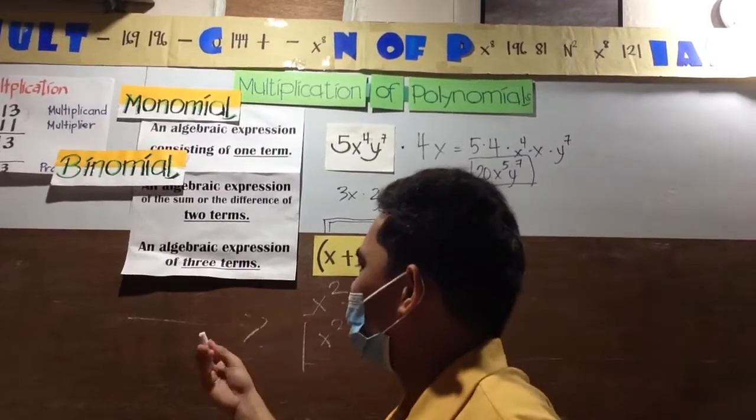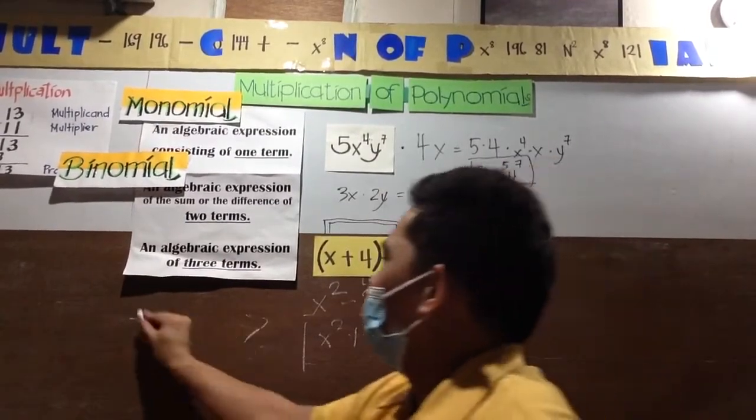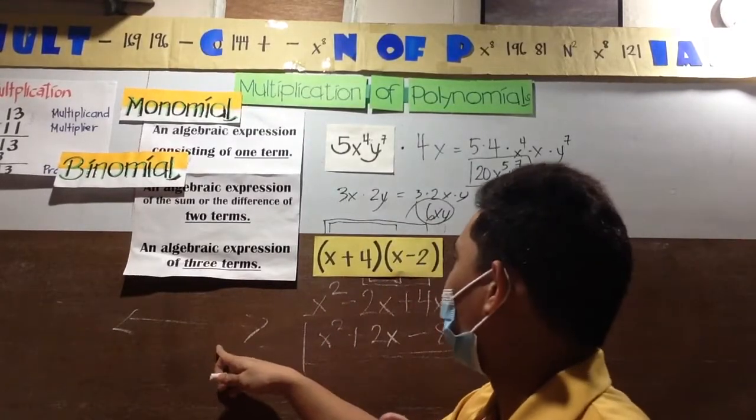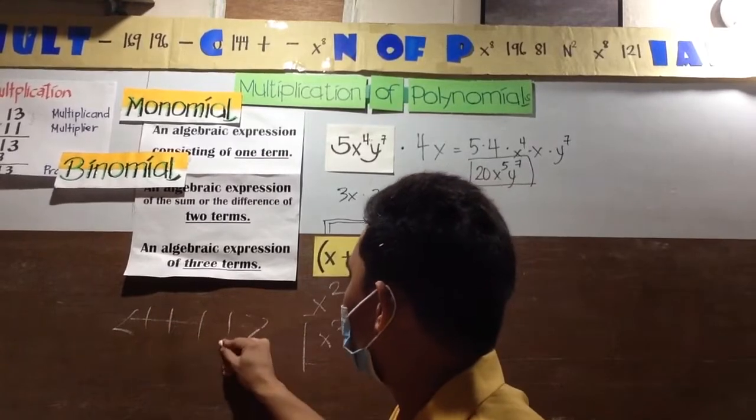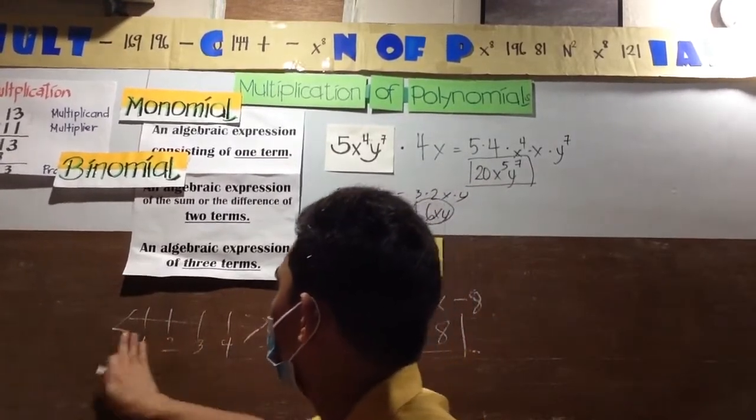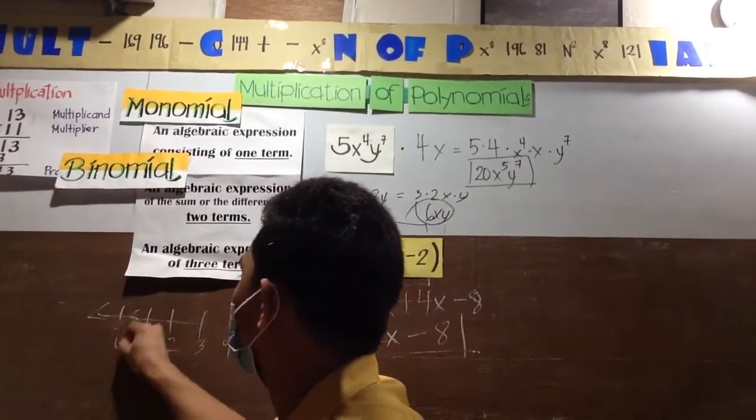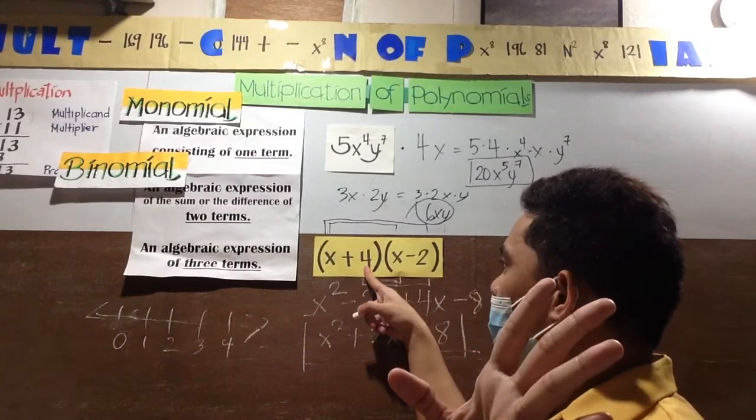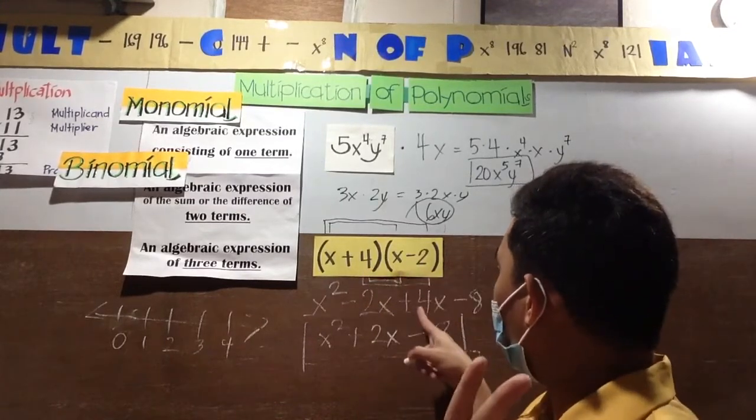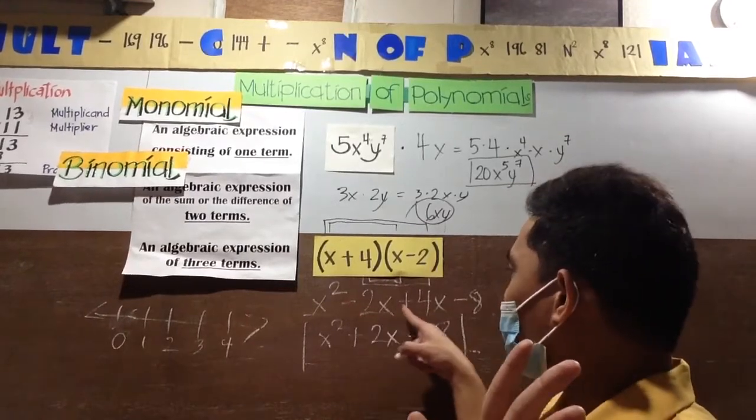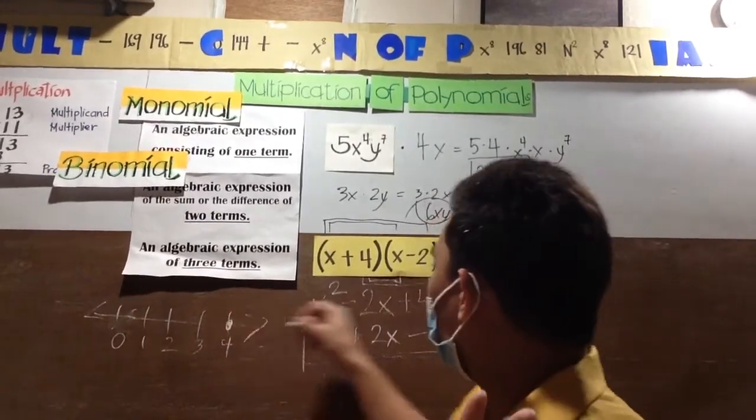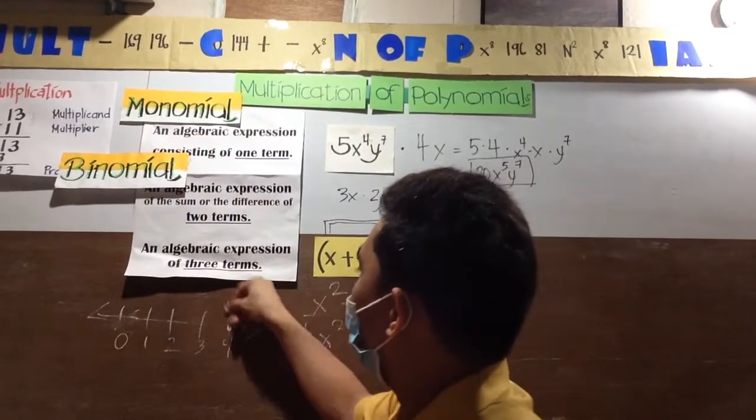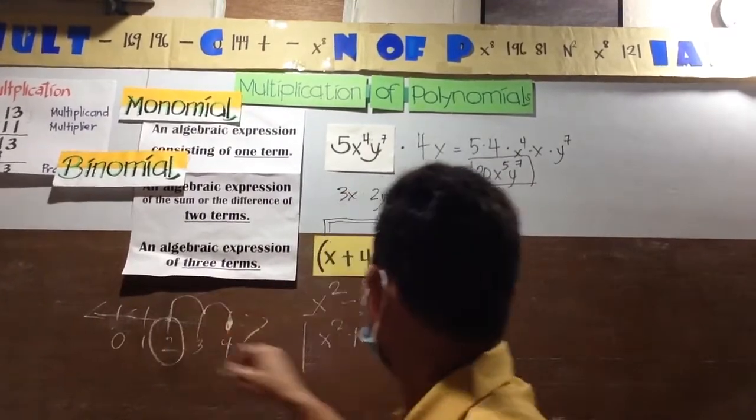Again, if you can't memorize the integers, you can make a number line. Like for example, negative 4, negative 3, 2, 1, then 0 here. So you're at positive 4. It will be like negative 2 plus 4. So you're at 4, then there's negative 2 - going to the left by 2, so 1, 2. That's why 2 is the correct answer.